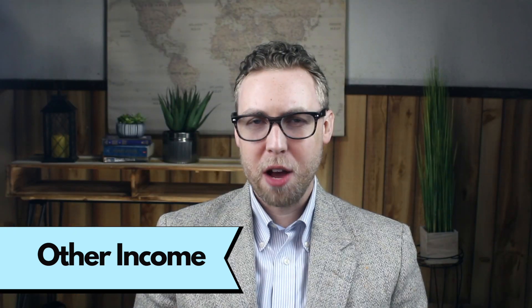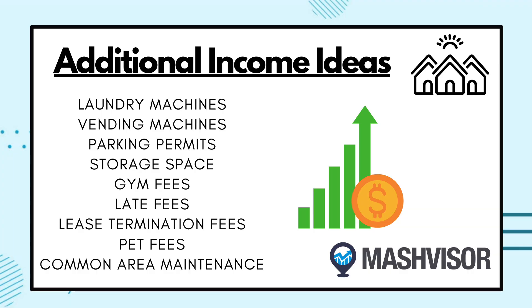Number two: other income. When calculating effective gross income in real estate, you also have to factor in additional revenue generated from a property's operations that is not part of the monthly rental payments you receive. This may include income from on-property amenities and services or add-ons that renters can pay for separately. Landlords can explore a variety of creative sources of income to boost their cash flow — for example, laundry machines, vending machines, parking permits, storage space, gym fees, late fees, lease termination fees, pet fees, and common area maintenance. This additional income contributes to a rental unit's worth and should be included in the calculation of EGI.